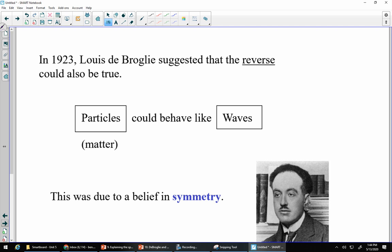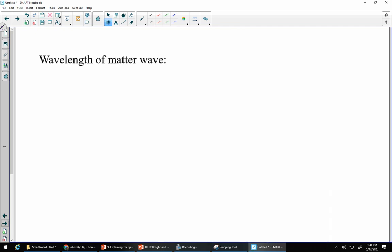Louis de Broglie suggested, well, what if the opposite could do? What if particles could behave more like waves? And he did this because a belief in symmetry in the universe is where it started. So what he came up with was the idea of the wavelength of matter.